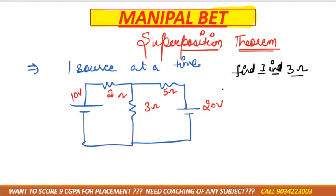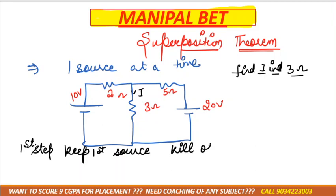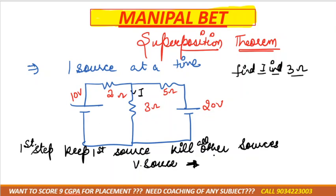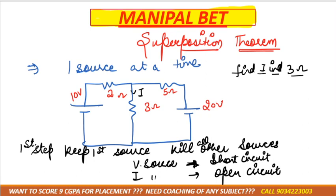This question will be solved in two steps. First step: take the first source and kill all other sources. If there is a voltage source, it must be short circuited — for Thevenin, the same: short circuit. If there is a current source, then in that case it would be open circuit.